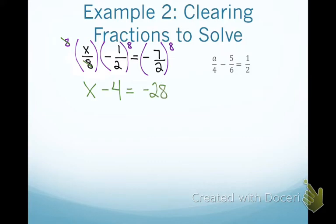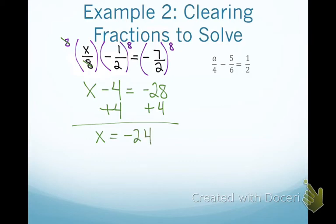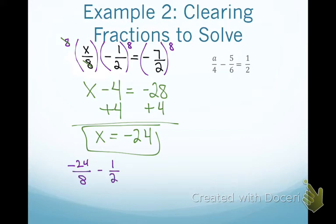Adding 4 to both sides gives x equals negative 24. Substituting back into the original: negative 24 over 8 minus one-half should equal negative 7 over 2. When you put that in your calculator, negative 7 over 2 does equal negative 7 over 2 — it checks out and I know my answer is correct.